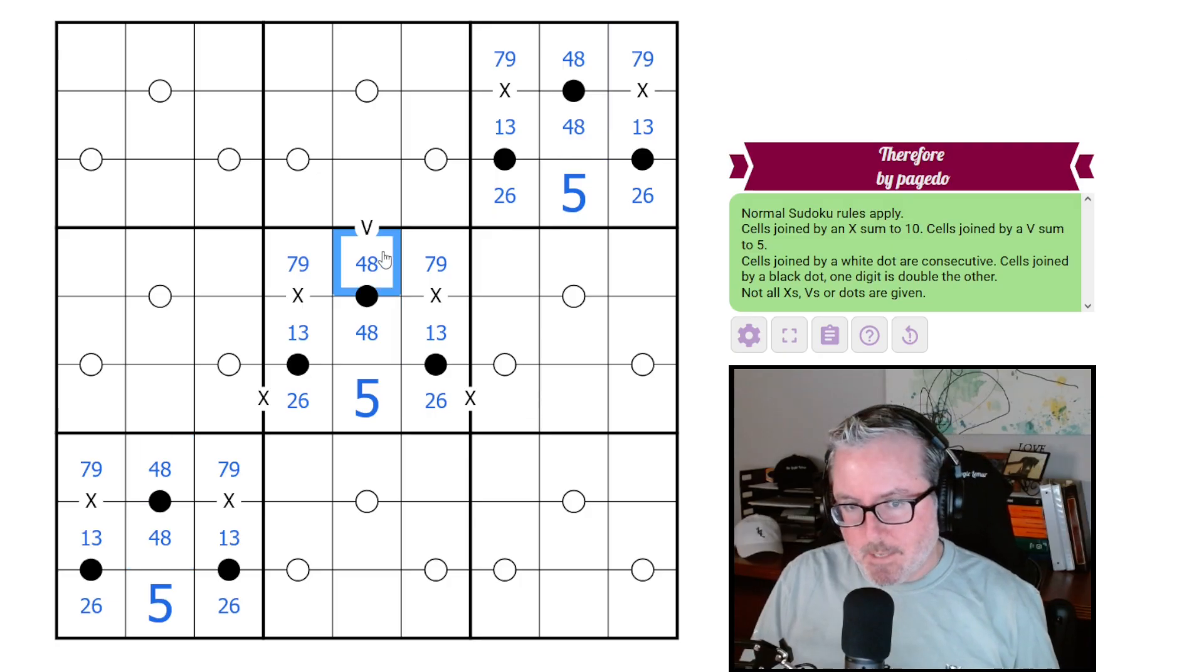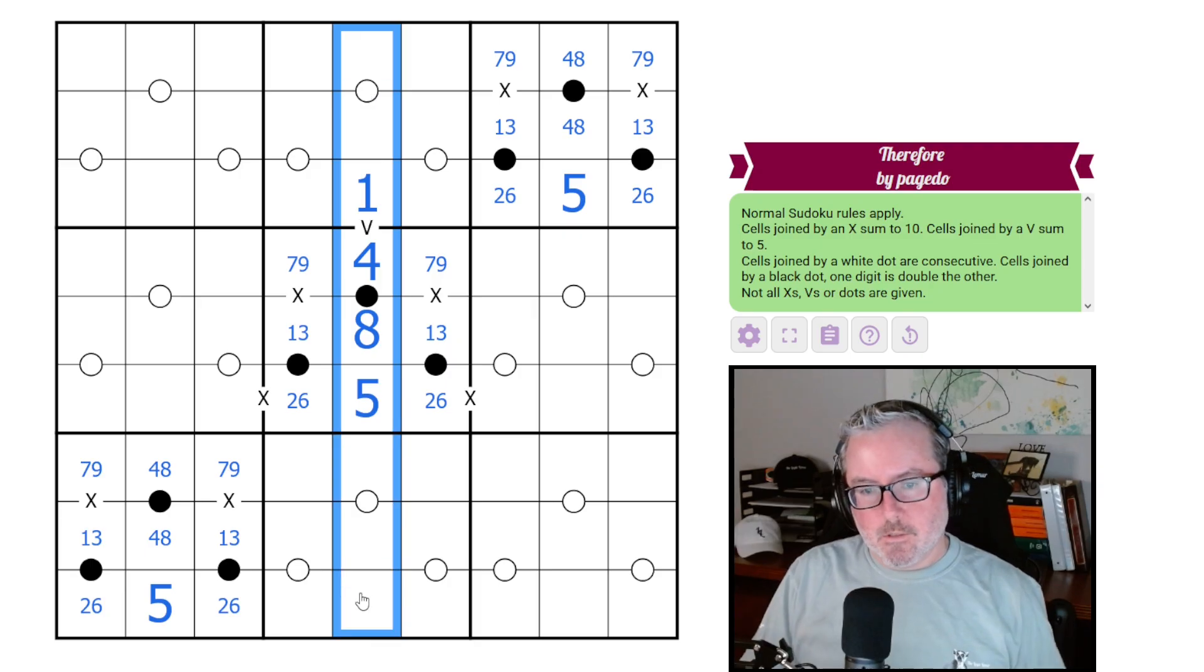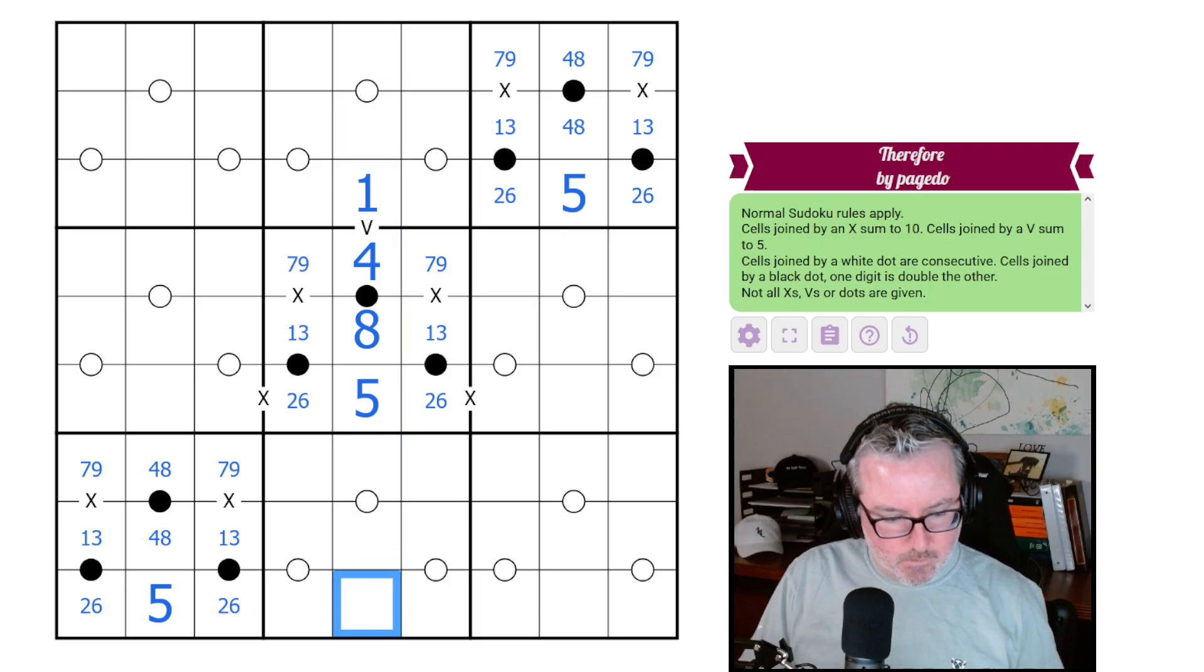These guys will all be from sevens and nines, which means these guys, therefore, these guys will be ones and threes. Therefore, these guys will be twos and sixes, and these guys will be fours and eights. Now that's perfect because we had that V clue sitting here. This is the four, this is the eight, that forces a one.